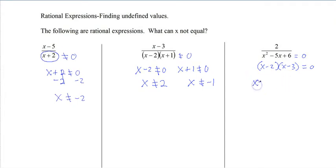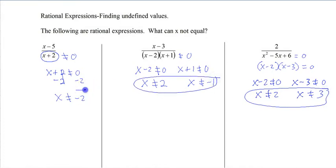Let's try that again. x minus 2 cannot be 0. x minus 3 cannot be 0, which gives us x cannot be 2. And x cannot be 3. And that's all we're looking for. What are the x values that will give us an undefined expression?